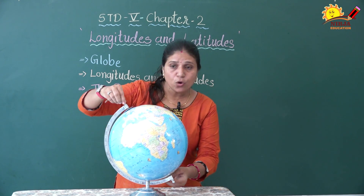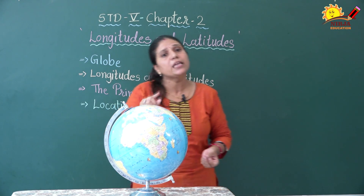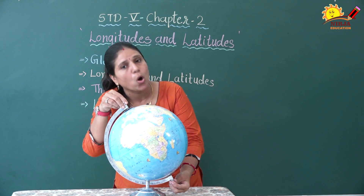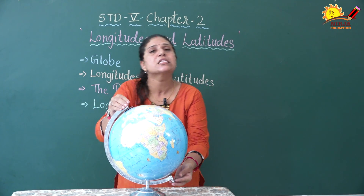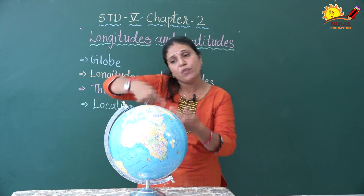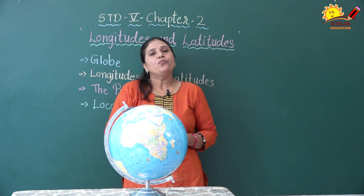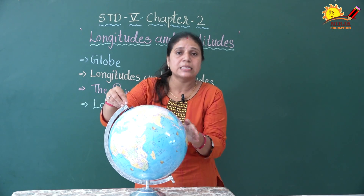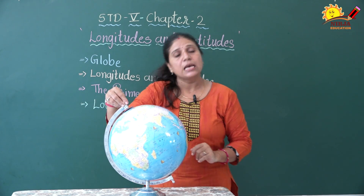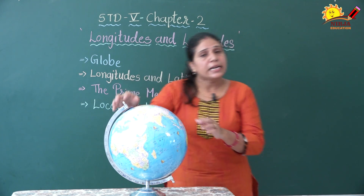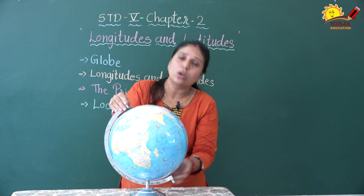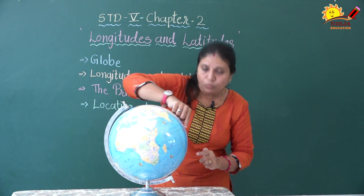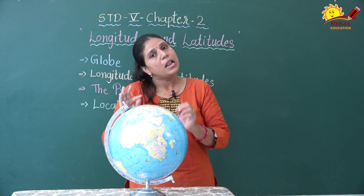The rod — if you see here, this is the rod — running through the north pole to south pole, top to bottom, is called the earth's axis. Earth is moving through this axis. If we see this globe, we can see a number of vertical and horizontal lines on it. The vertical lines that pass through the north to south pole are called longitudes. The horizontal lines that move through the east to west side are called latitudes.